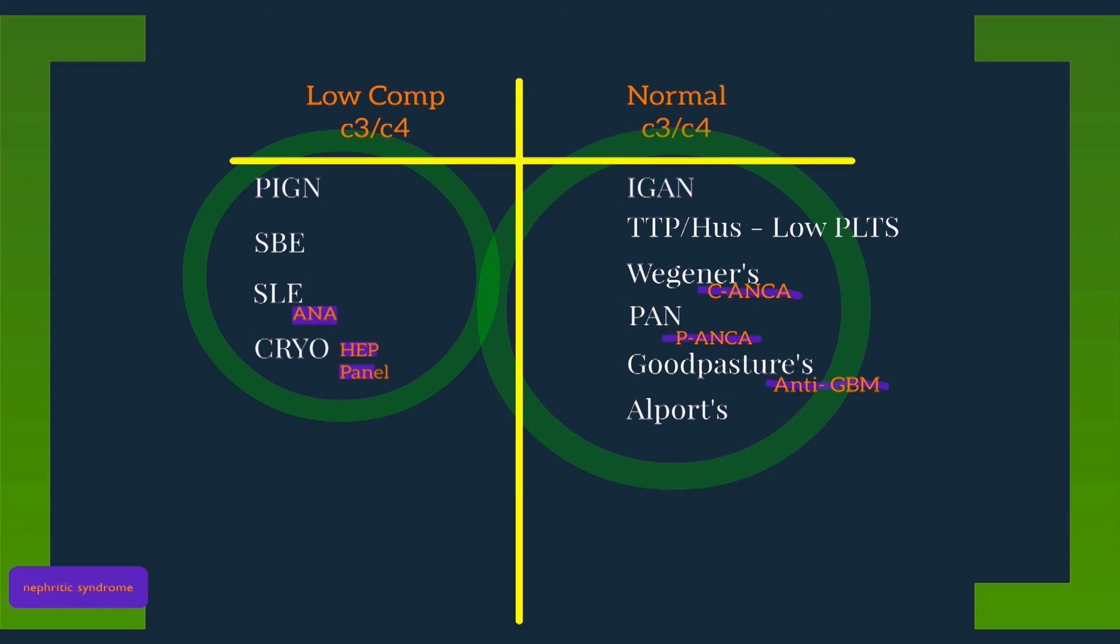So when one sees a patient with nephritic syndrome, the most important test to get is complement levels, to define whether the patient has low complement immune complex disease or normal complement vasculitic disease. This is a very important feature to understand about these illnesses and is the major branch point in diagnostics.